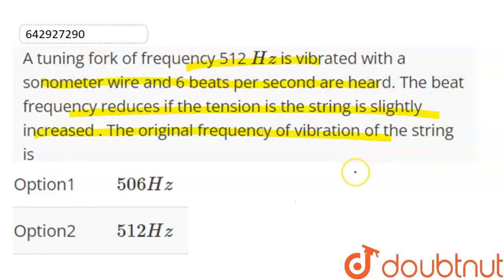We have a formula of n equals 1 over 2L times the square root of T over mu. So, the tension is increased, so the frequency is increased. Here we have a frequency of tuning fork is 512. The beats are produced? 6 beats are produced.